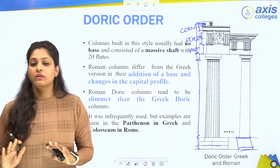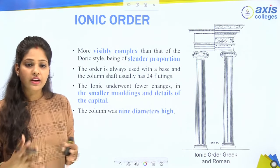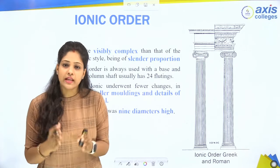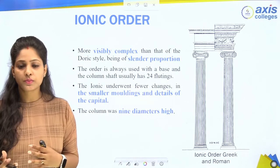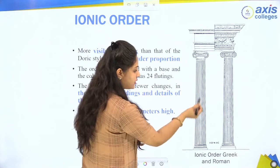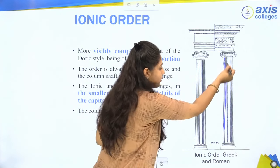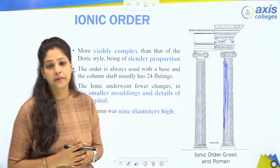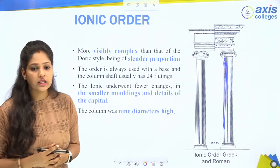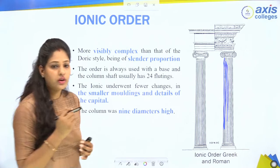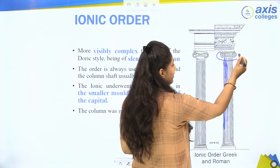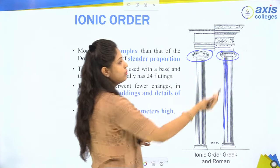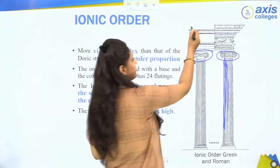The Roman Doric column was comparatively slimmer than the Greek Doric column. Now, the Ionic order was visibly more complex and a little more slender than the Doric proportion. You can see the flutes in the order — 24 flutes in the Ionic order. There were changes in the capital molding and diameter. You can see the difference in molding between Greek and Roman architecture, and also differences in the entablature.